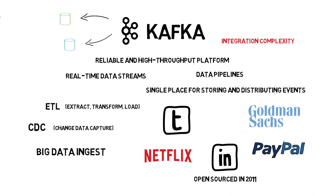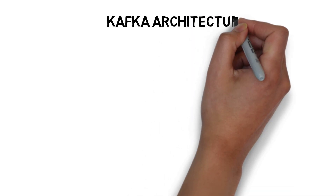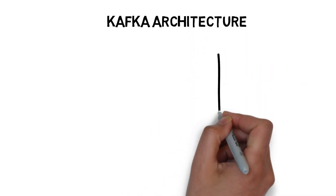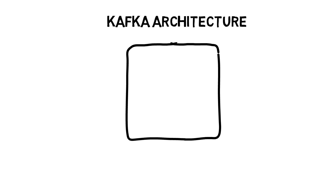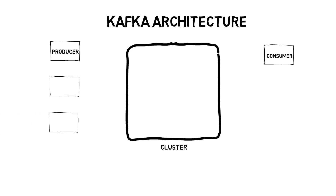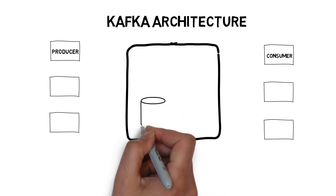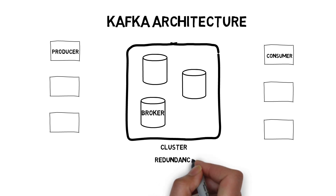Now let's dive a little bit deeper into the Kafka architecture. On a high level, a usual Kafka architecture consists of a Kafka cluster, producers, and consumers. A single Kafka server within a cluster is called a broker. A Kafka cluster usually consists of at least three brokers to provide enough level of redundancy.